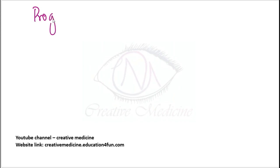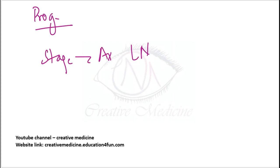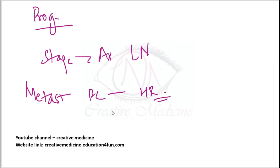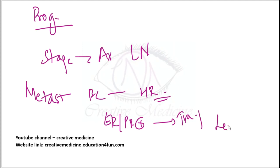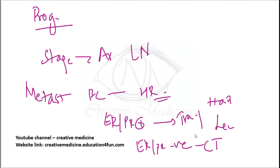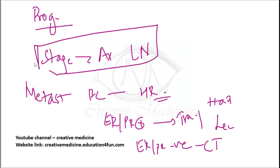In prognostic factors, stage is more important than axillary lymph node clearance status. In metastatic breast cancer, hormone receptor status is important. If the patient is ER/PR positive, trastuzumab or leuprolide or hormone therapy can be given. If ER/PR negative, chemotherapy is given. The most important prognostic factor is stage, followed by axillary lymphadenectomy.